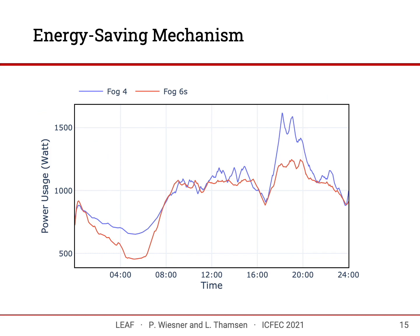Comparing fog 4 and fog 6S: the energy-saving mechanism in fog 6S outperforms fog 4 in two cases. First, during the night — roughly between 1 a.m. and 7 a.m. — far less energy is wasted on idle fog nodes because they are simply shut off. Second, during peak hours, fog 6S provides sufficient fog computing capacity to host all processing tasks, while in fog 4 part of the computation has to be offloaded to the cloud, resulting in additional power consumption from wide area network usage. These findings align with prior research identifying scenarios where fog computing can reduce power usage, and the main motivation is to demonstrate how LEAF enables implementation of energy-aware online decision-making algorithms.